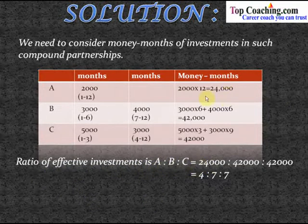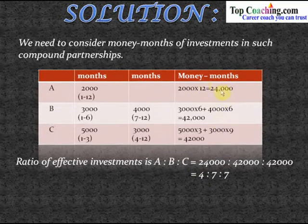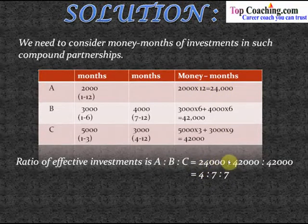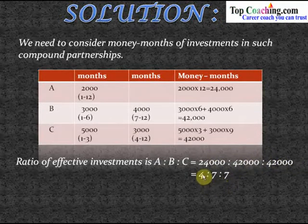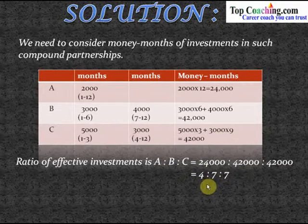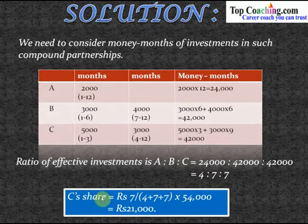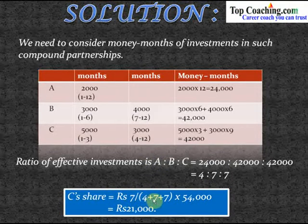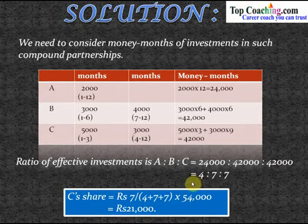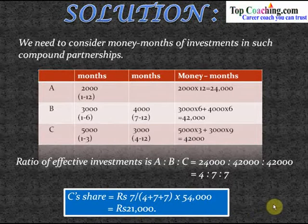The ratio of effective investment A to B to C is twenty-four thousand to forty-two thousand to forty-two thousand, which simplifies to four to seven to seven. C's share is therefore seven divided by eighteen (four plus seven plus seven) multiplied by fifty-four thousand, which equals rupees twenty-one thousand. Thus, C gets rupees twenty-one thousand at the end of the year.